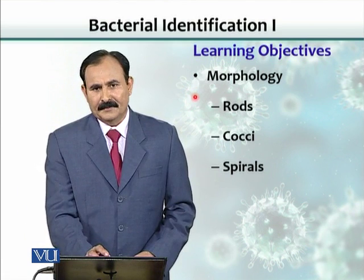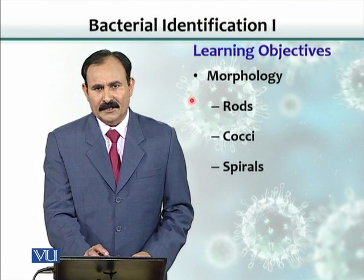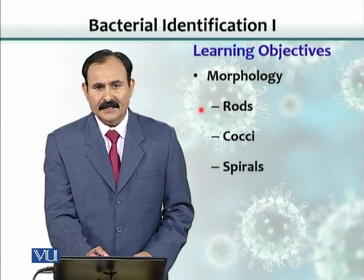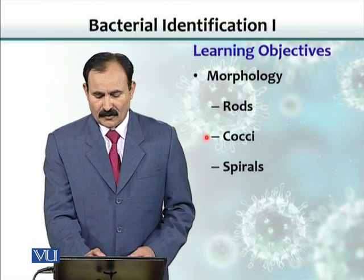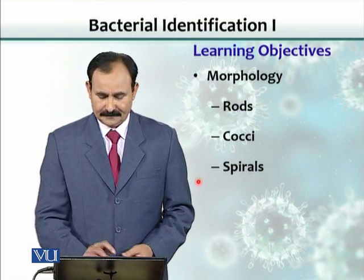Based on the morphology of the organisms, they could be classified as having rods or spherical — what we call cocci — or spirals.